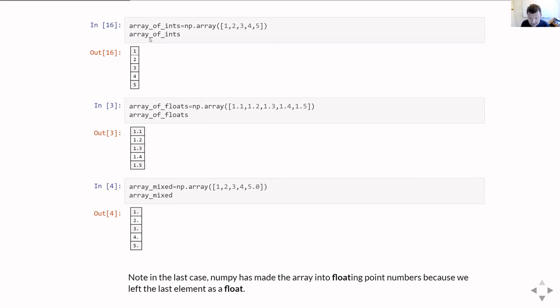It's able to do this because it can work out that an int can be represented as a floating point number. If I tried adding a string into that list, then it wouldn't be able to do that, because you can't automatically, guaranteed, convert a string to a floating point number.